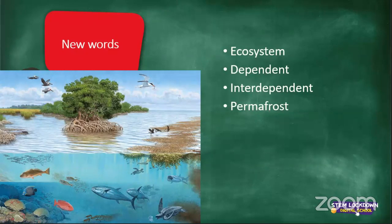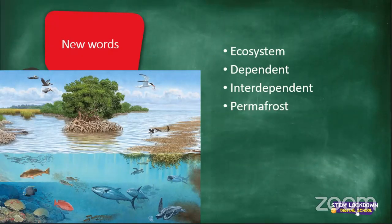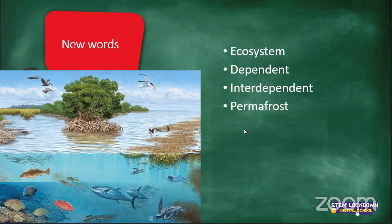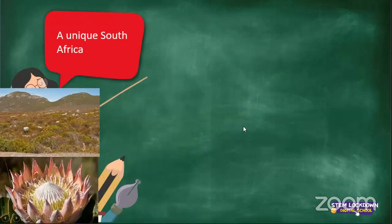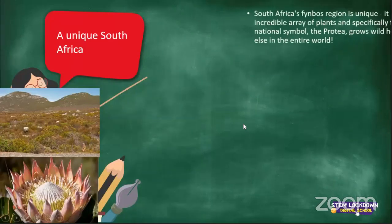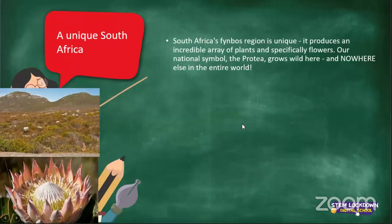JD says that 'dependent' means to rely on something — like non-living things and living things relying on each other. Perfect! So JD has completed one of her words for tomorrow. Just write down the meanings and we'll discuss those answers tomorrow.